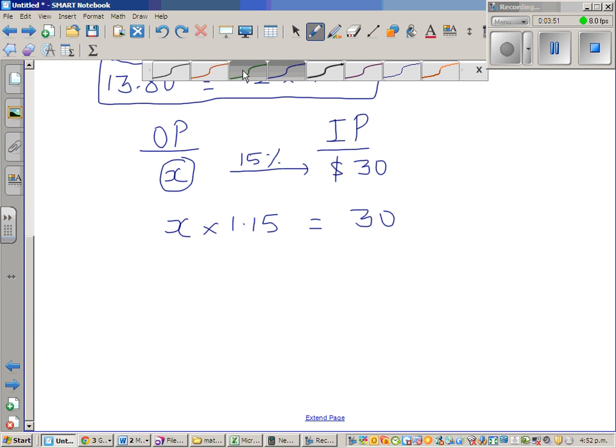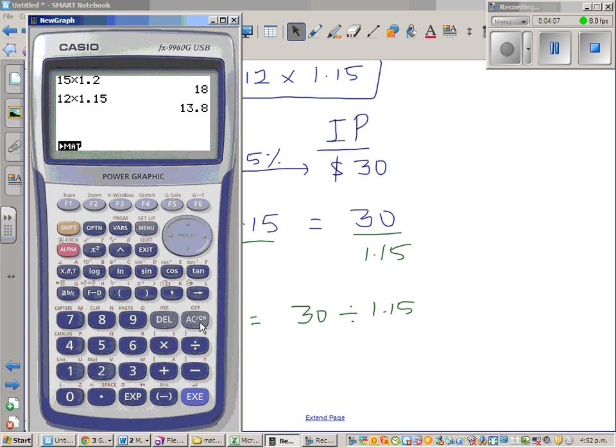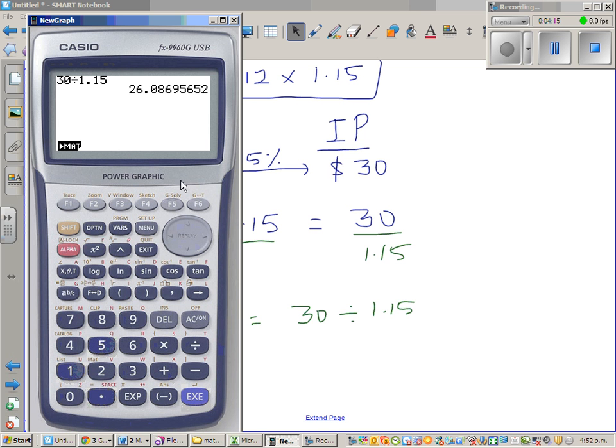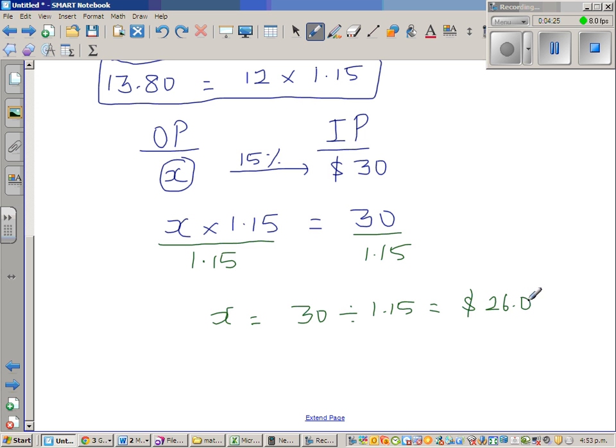So to get rid of this 1.15 from the left-hand side, I would divide by 1.15. So you do the same thing on the other side. So x is 30 divided by 1.15. So this is one important concept you need to understand. It's $26.09.